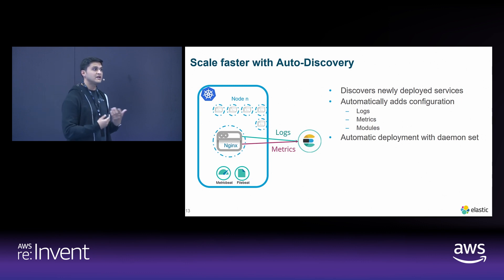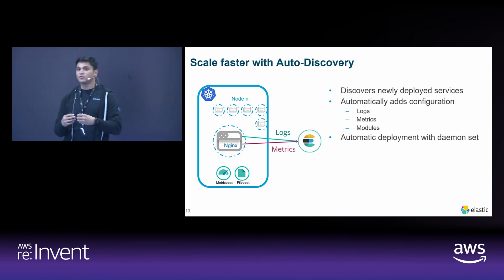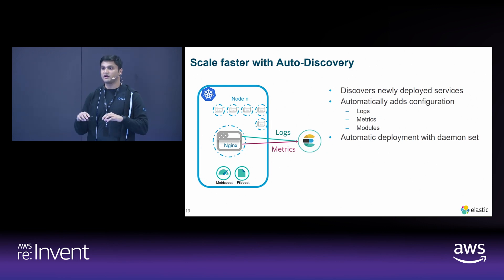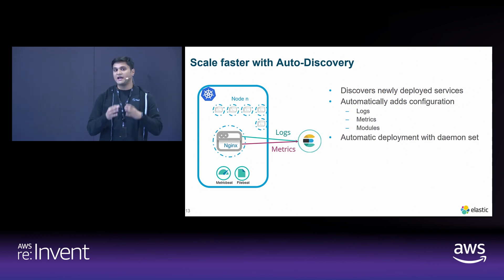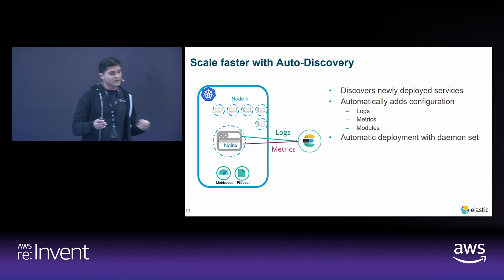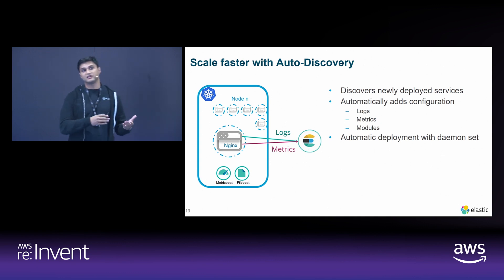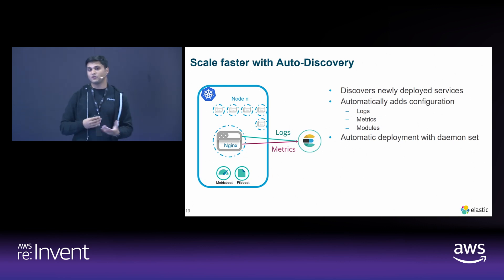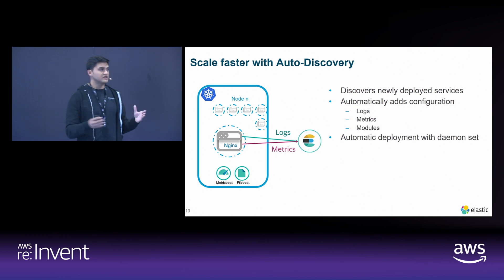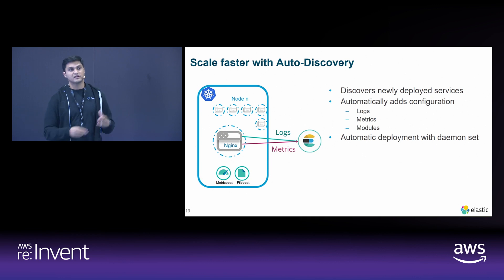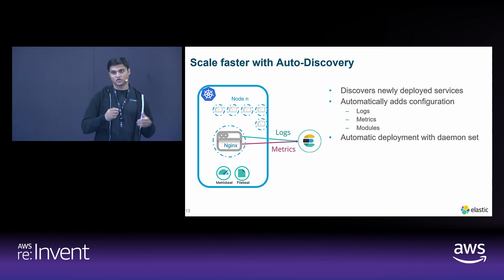A really nice feature we've introduced is auto-discovery. We have to think about the applications deployed within Kubernetes — whether stateless apps like Nginx or stateful ones like MySQL and Postgres. We want to ensure that as you continuously deploy on this scalable platform, monitoring starts as soon as those apps come up automatically, without you having to think about it. Auto-discovery with our Beats automatically looks for popular software like Nginx and MySQL, and as soon as those things get deployed, it collects the exact logs and metrics needed for the turnkey module integration.